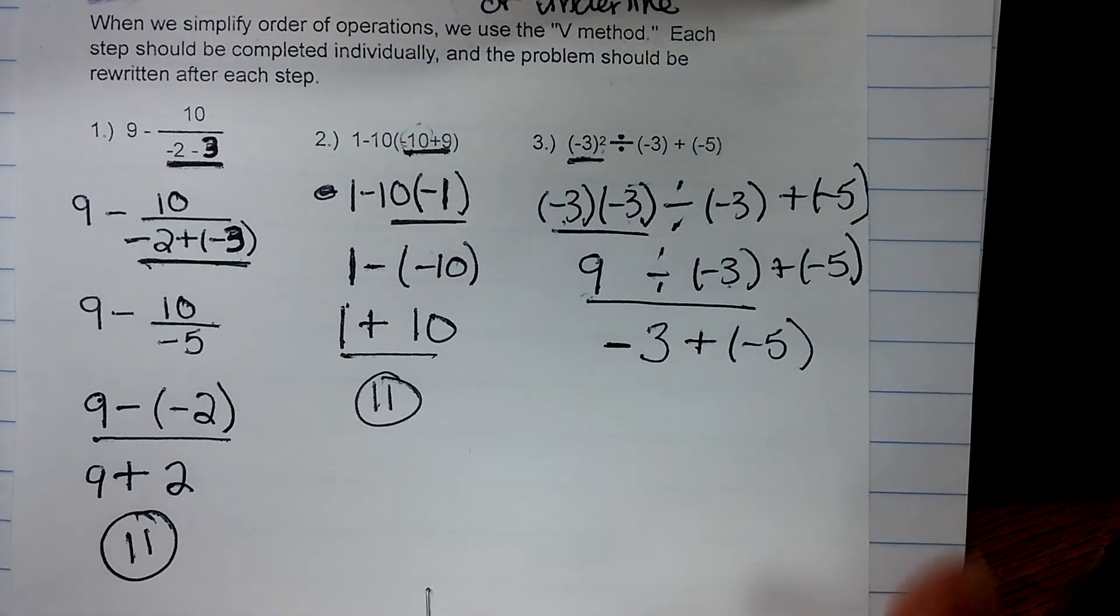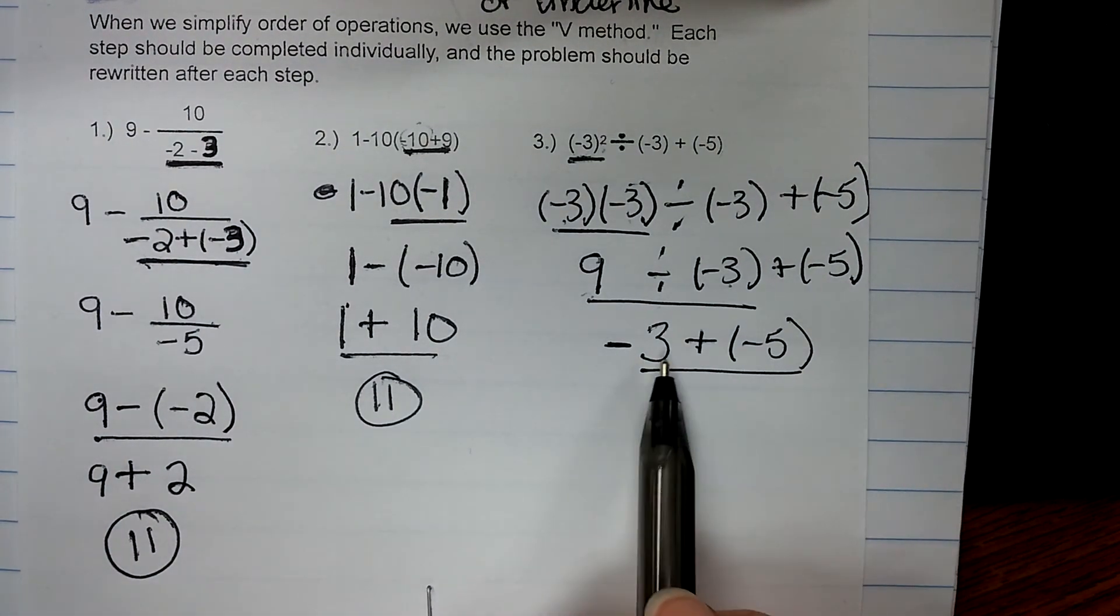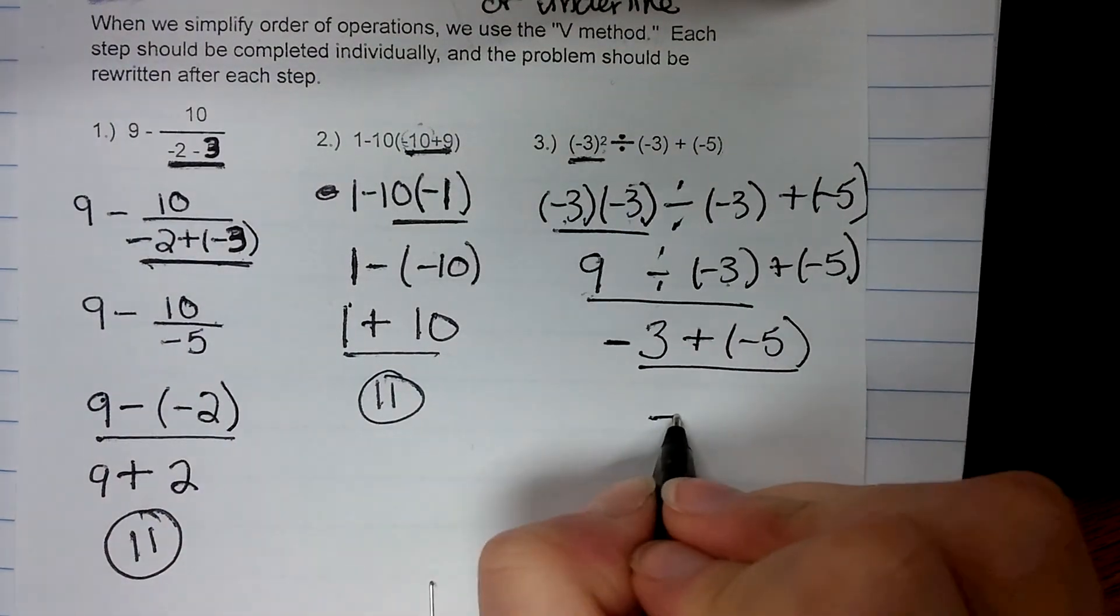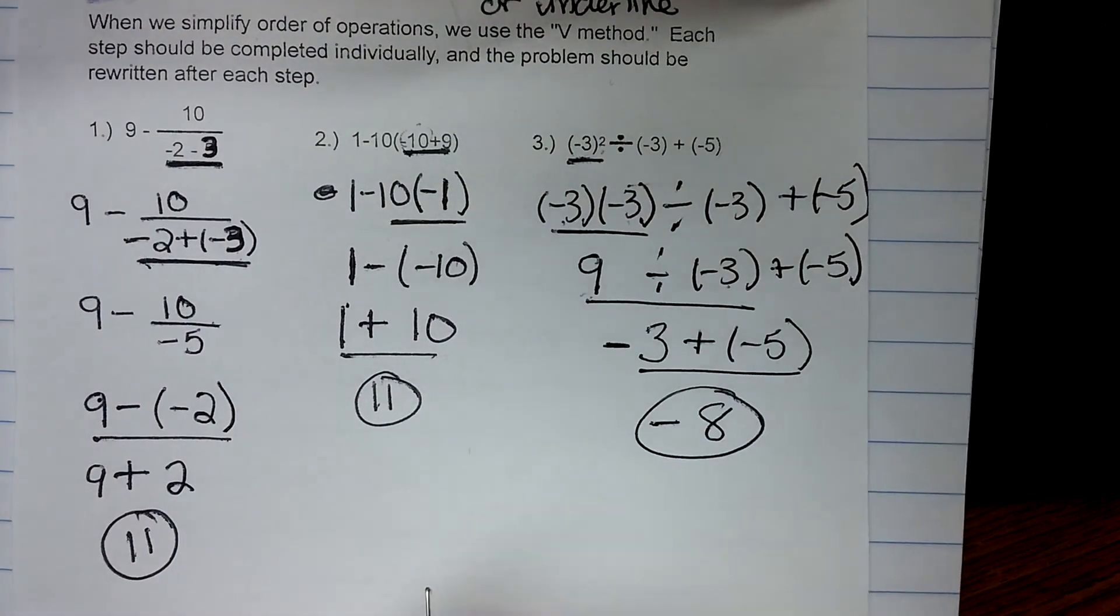So my signs are the same for the addition problem, so I add the two numbers. 3 plus 5 is 8, and then we keep the sign they share. So the answer to number 3 is negative 8.